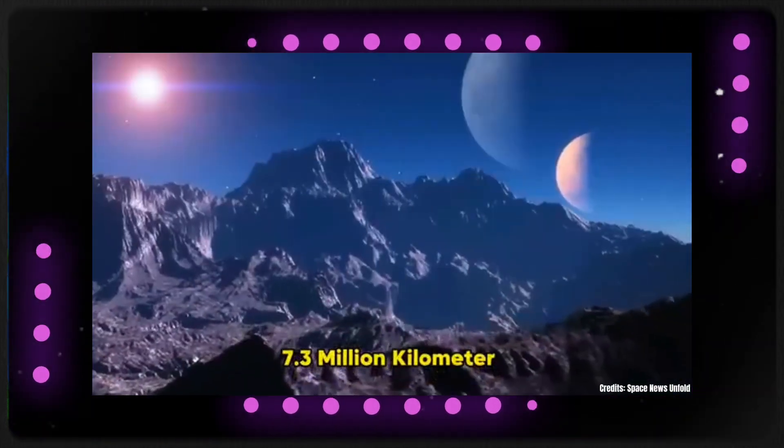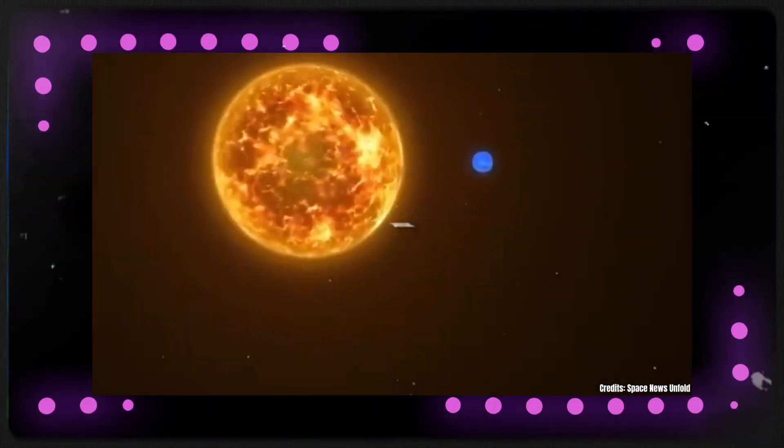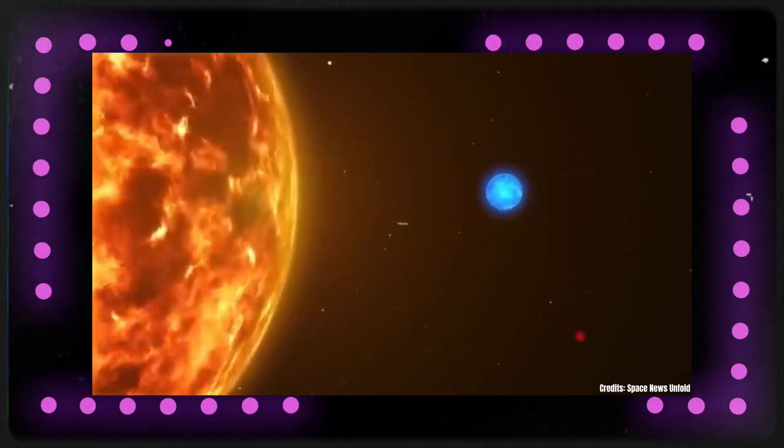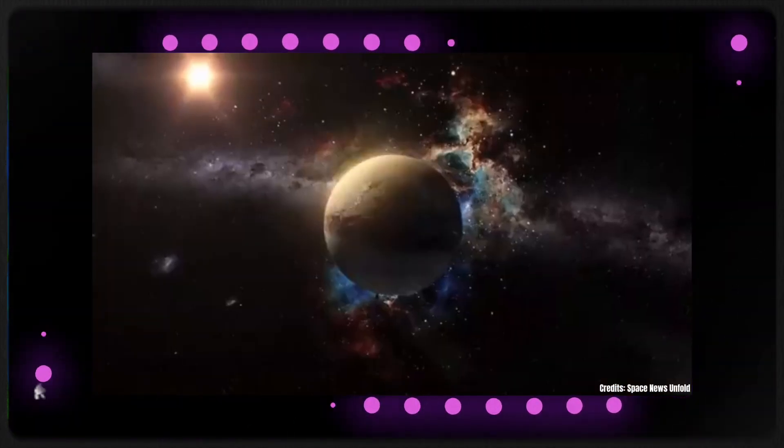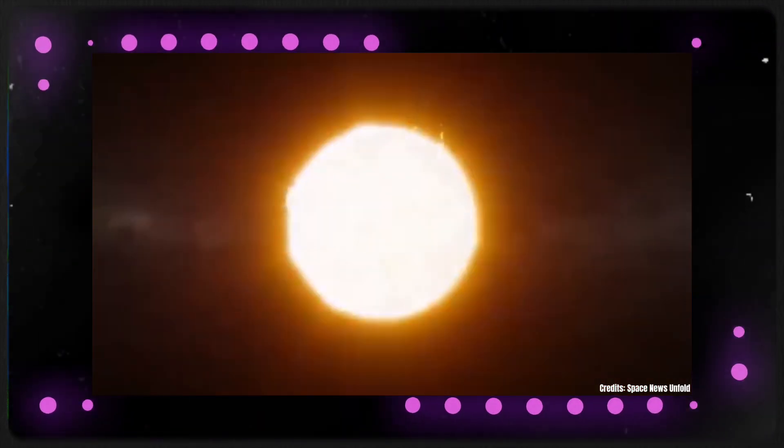Despite being so close, Proxima b isn't scorched like Mercury because Proxima Centauri is a faint red dwarf, providing only 60% of the energy that Earth receives from the Sun. This puts Proxima b in the habitable zone, meaning conditions may support the possibility of life.